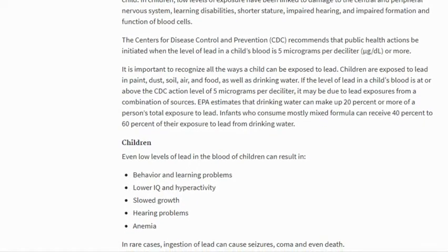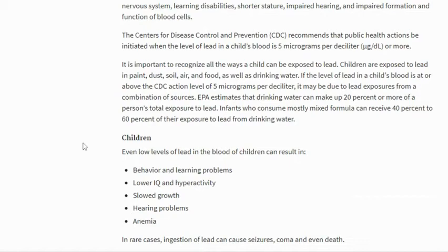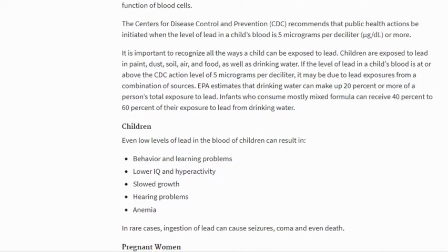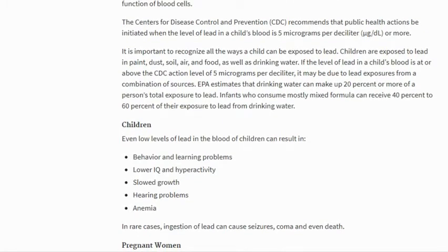It is important to recognize all the ways a child can be exposed to lead. Children are exposed to lead in paint, dust, soil, air, and food, as well as drinking water. If the level of lead in a child's blood is at or above the CDC action level of 5 micrograms per deciliter, it may be due to lead exposures from a combination of sources. EPA estimates that drinking water can make up 20% or more of a person's total exposure to lead. Infants who consume mostly mixed formula can receive 40% to 60% of their exposure to lead from drinking water.